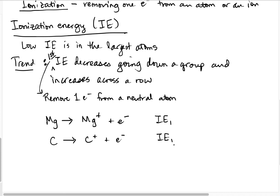If you guessed that carbon would have the higher ionization energy, you are correct. The first ionization energy for carbon — going from neutral carbon to C⁺ — is 1,086 kJ/mol, while for magnesium it is 737 kJ/mol. So carbon is smaller, and even though it has fewer protons, it is still harder to remove that first electron than it is for magnesium.